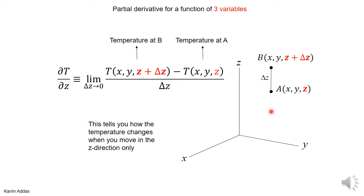The temperature doesn't have to change the same way in all three directions. For instance, if you have an air conditioner on one side and a heater on another, the temperature changes a lot in the x direction but may not change much in the z direction. So the change in temperature can be very different depending on which direction you move.